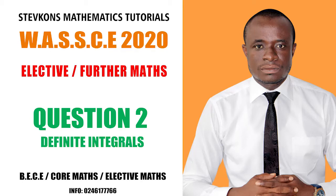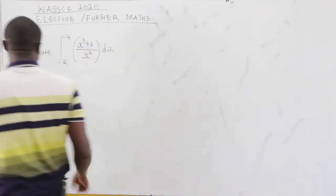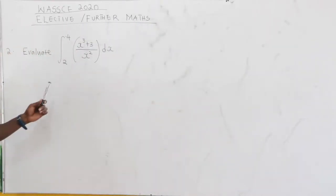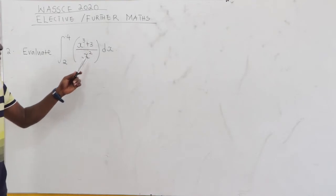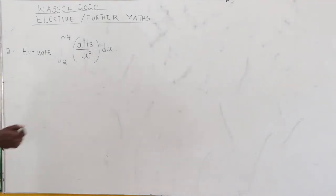WASSCE 2020, question number 2, elective maths. Now, we have been told to evaluate the integral from 2 to 4 of x to the power 3 plus 3 all over x squared dx.